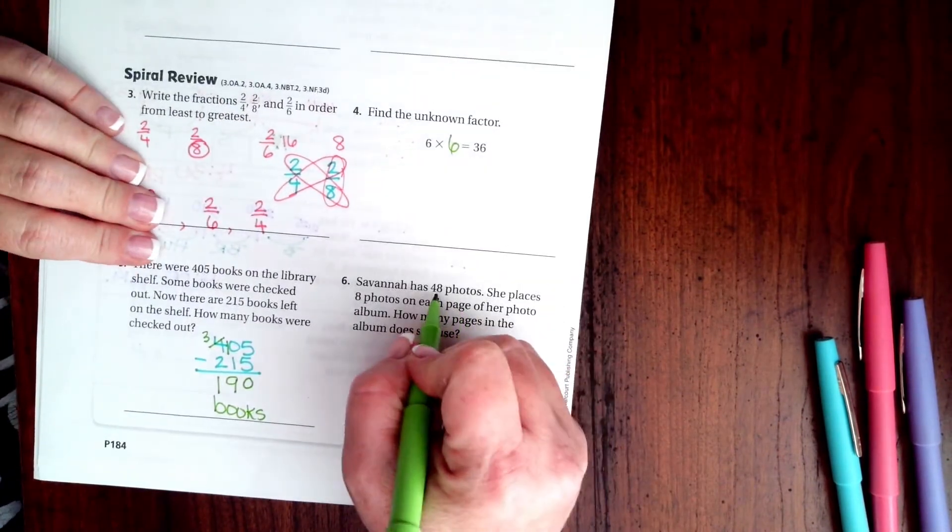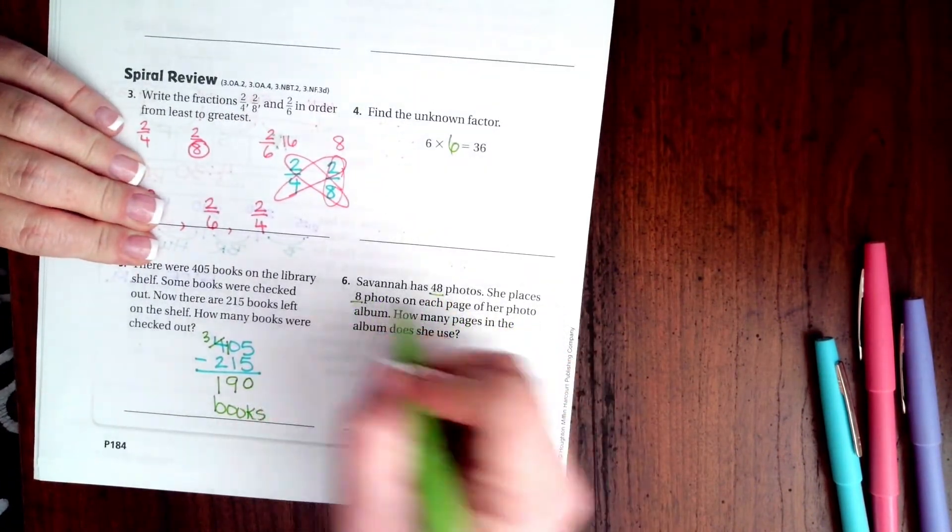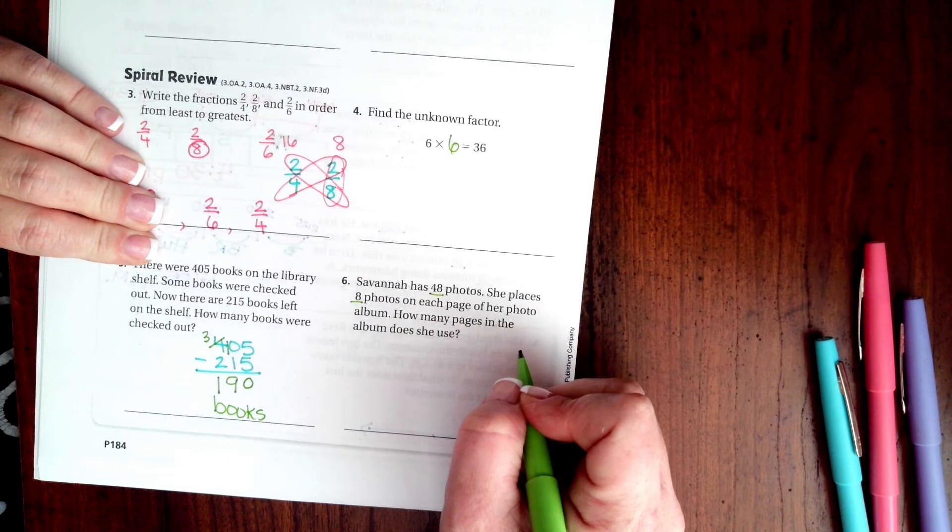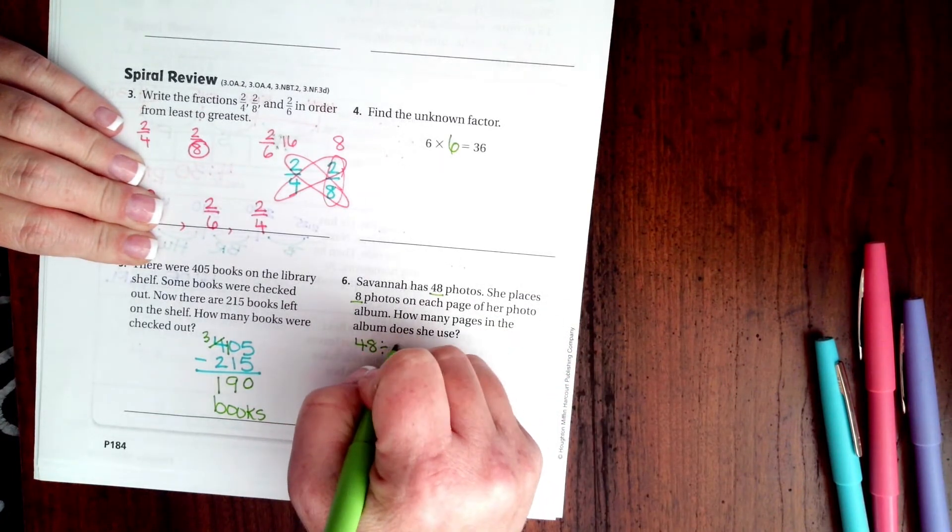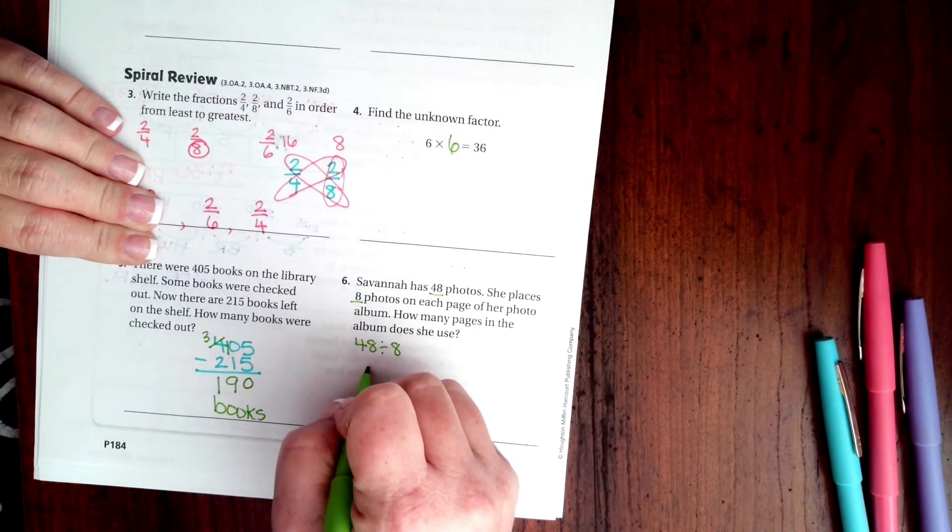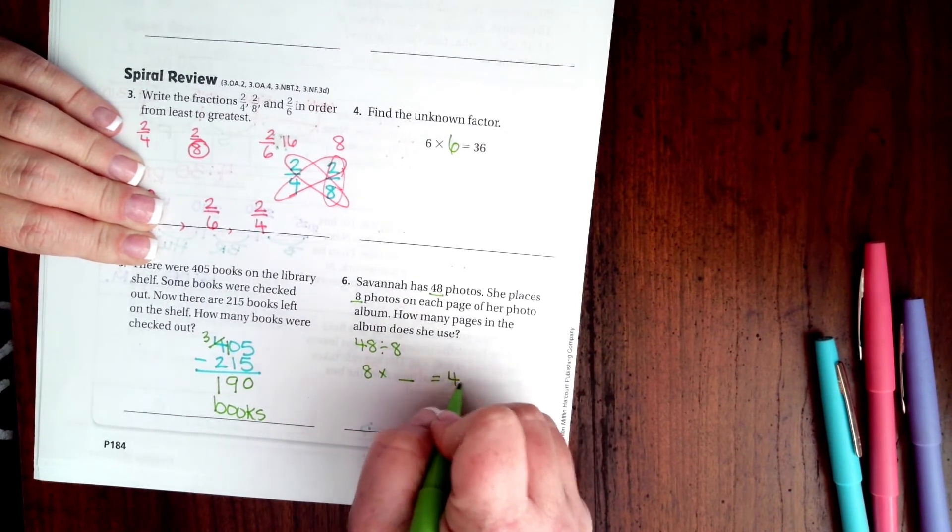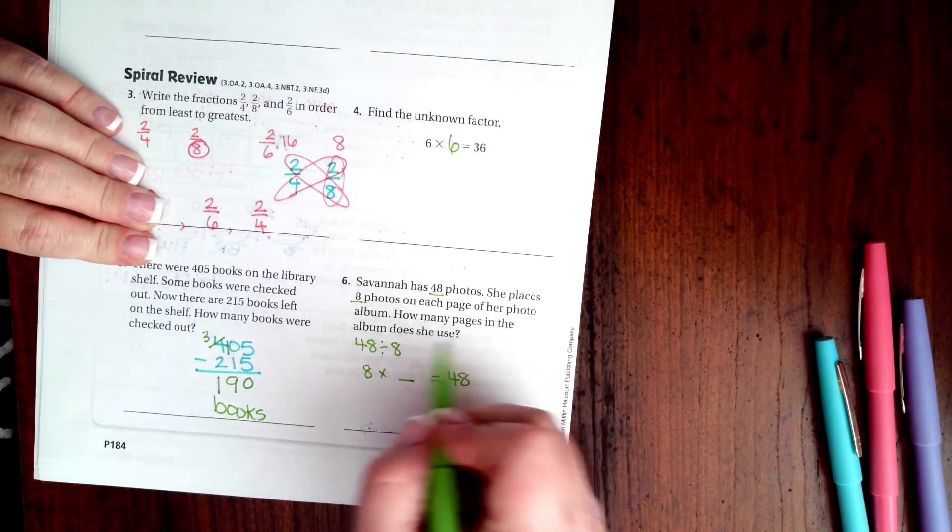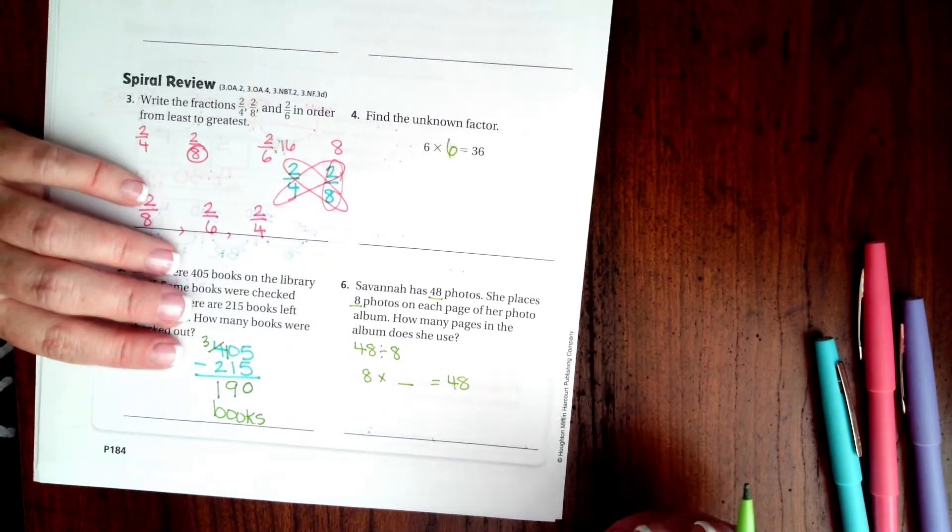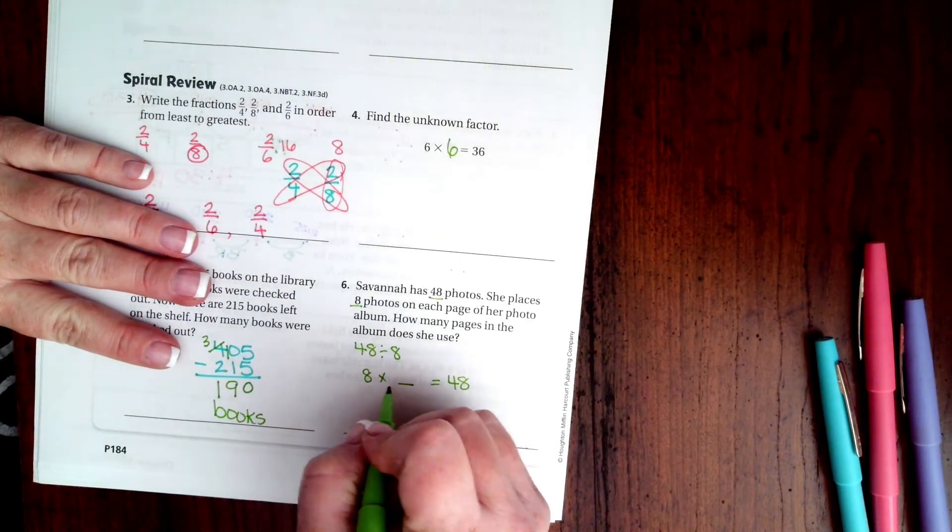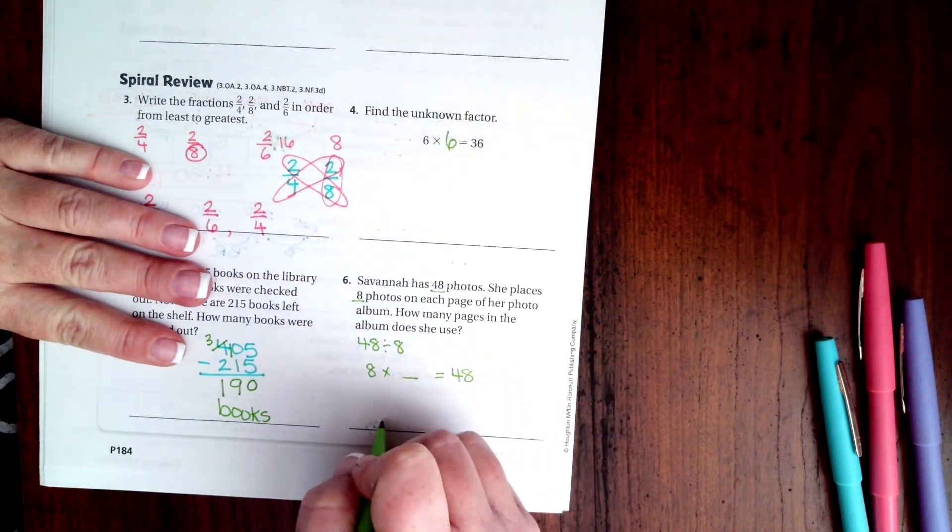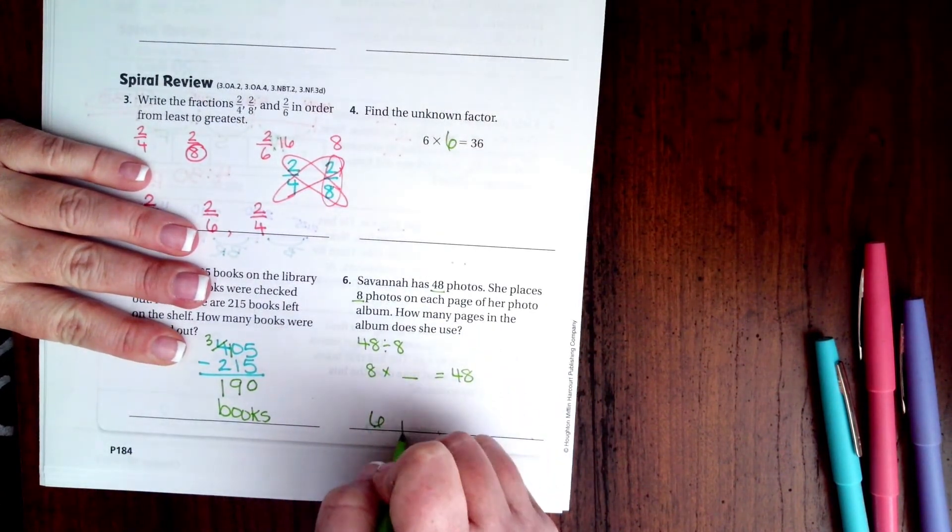Savannah has 48 photos. She places 8 photos on each page of her photo album. We can either do 48 divided by 8, or we can do 8 times what is 48. How many pages in the album does she use? Well, 6 times 8 is 48, so 6 pages.